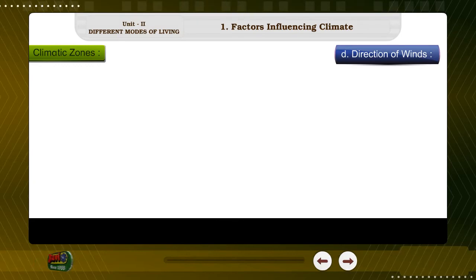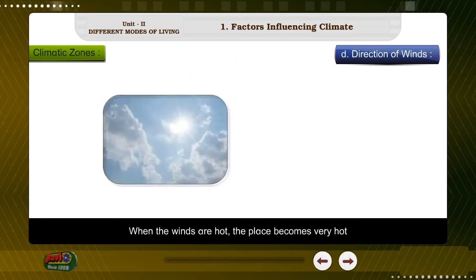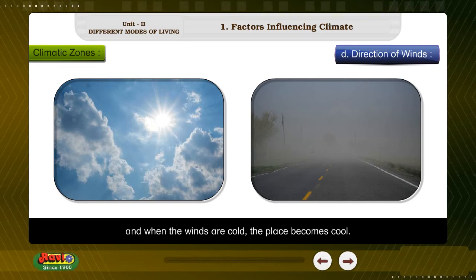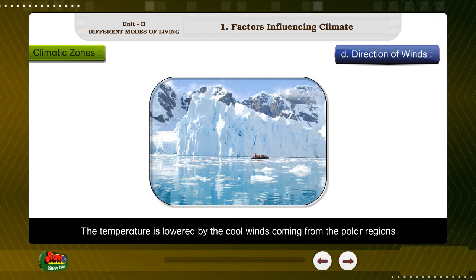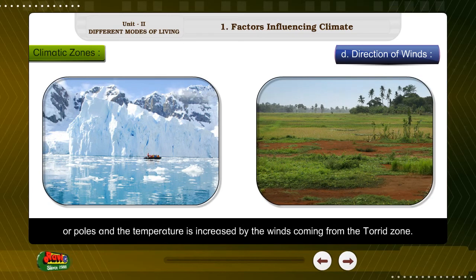Factor D: Direction of winds. The direction of winds also influences the climate of a place. When the winds are hot, the place becomes very hot, and when the winds are cold, the place becomes cool. The temperature is lowered by the cold winds coming from the polar regions or poles, and the temperature is increased by the winds coming from the torrid zone.